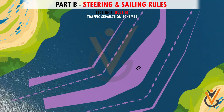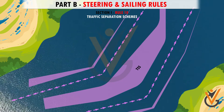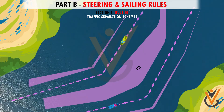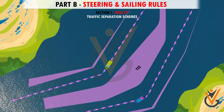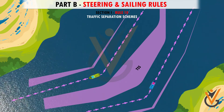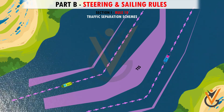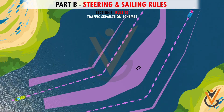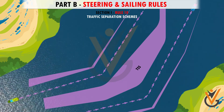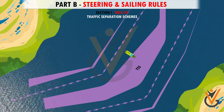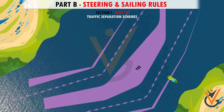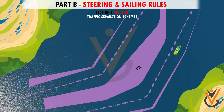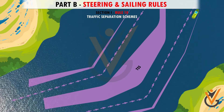Rule 10: Traffic Separation Schemes. In traffic separation schemes, all vessels should navigate in the general direction of traffic flow as marked by the traffic separation scheme. When crossing, they should cross at right angles to the general direction of traffic flow, and when joining the traffic separation scheme, they should merge with the general direction of traffic flow with as small an angle as possible.